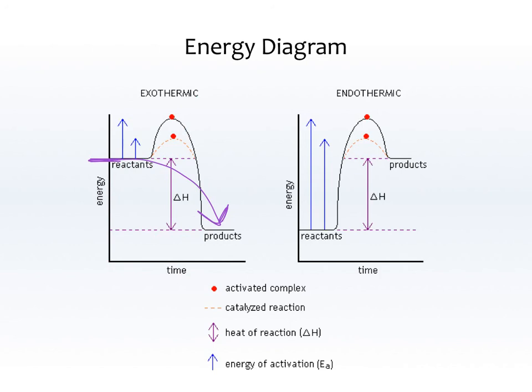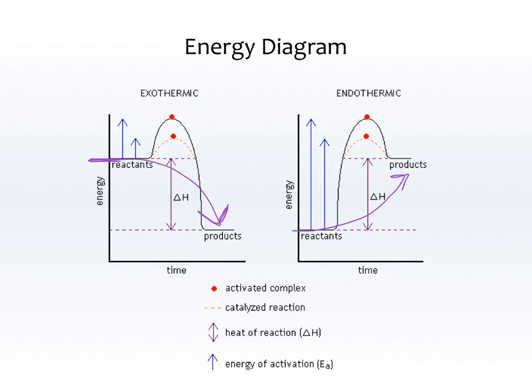Endothermic is the same concept: activation energy is how much energy it takes to get to the top of the hill, and with a catalyst the hill is shorter. The difference is that in an endothermic reaction the reactants have less energy than the products, so overall it takes in energy instead of giving off energy. And that's our Unit 1 kinetics. Join me next time for Reaction Rate.